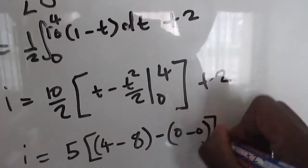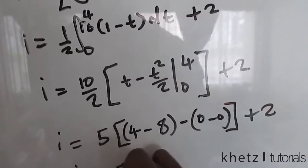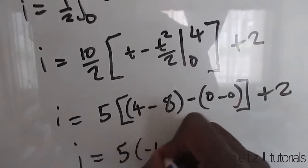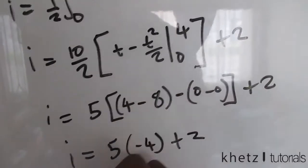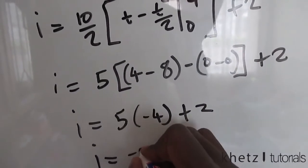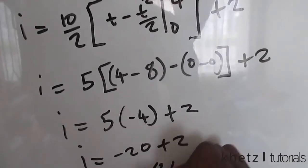Put that in there and add 2 to this. So this is going to be 5 multiply by 4 minus 8 is negative 4, so negative 4, and finally add 2. So i at time equals 4 seconds is equal to negative 20 plus 2, which is equals to negative 18 amperes.